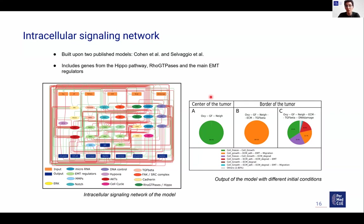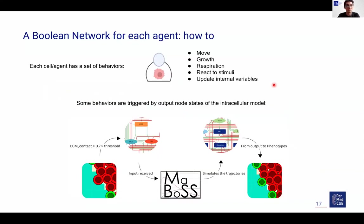We built the model and then used MaBoSS to simulate it, checking that it reproduced previous results from the papers we built upon and that it produced the correct phenotype according to different conditions. For example, at the center of the tumor, cells sense oxygen, growth factor, and neighbors, so the resulting phenotype is cell freeze and cell growth — the core of the tumor is not moving but just growing. At the border, when a cell senses the extracellular matrix, the network should be in an EMT condition with the ECM adhesion, migration, and ECM degradation nodes active. Once we confirmed the model produced the correct behavior, we proceeded to implant the network into our agents.